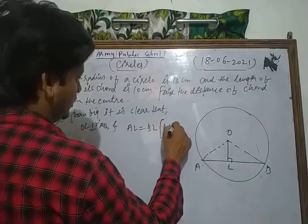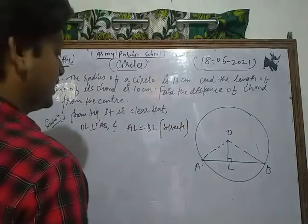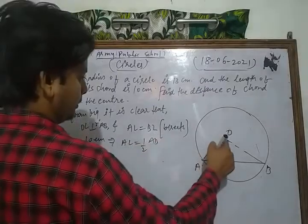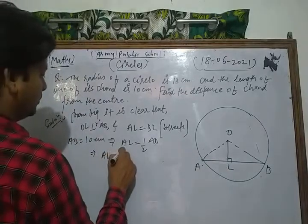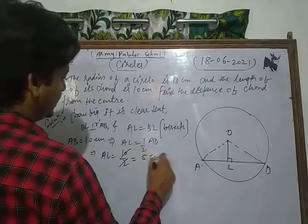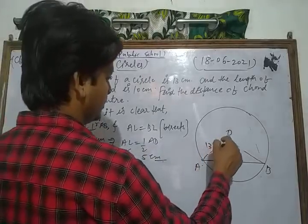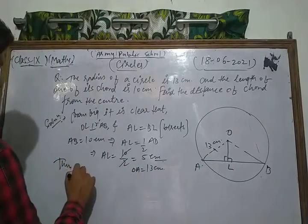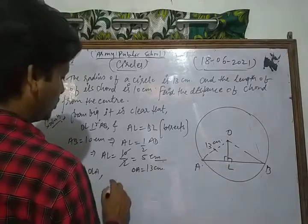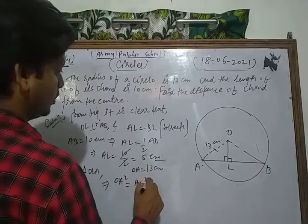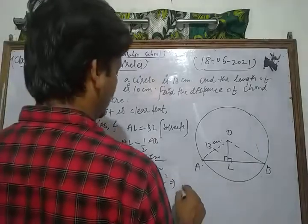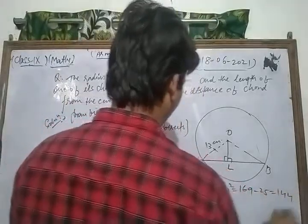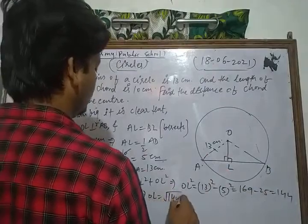Since the perpendicular bisects the chord and AB is equal to 10 cm, AL is equal to half of AB, which is 10 divided by 2, equal to 5 cm. The radius OA is equal to 13 cm. This is a right-angle triangle. In triangle OLA, using the Pythagoras theorem: OA² = AL² + OL². So OL² = OA² − AL² = 13² − 5² = 169 − 25 = 144. Thus OL = √144 = 12 cm.